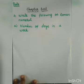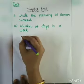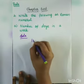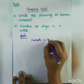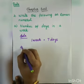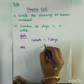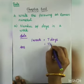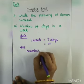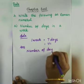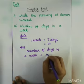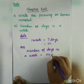What is the first question? Number of days in a week. How many days are in one week? One week equals 7 days. So the number of days in a week equals 7 days. What is the Roman numeral of 7? The answer is VII.